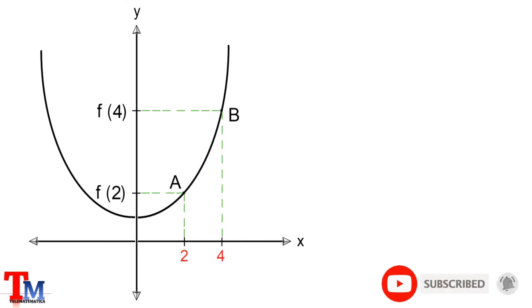Luego la tasa de variación media representa el valor de la pendiente de la recta secante que pasa por los puntos A y B.